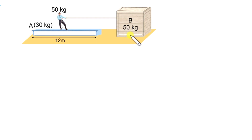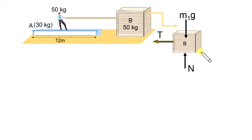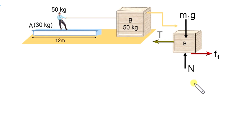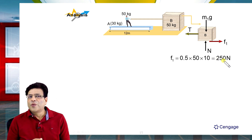Let us analyze the forces on the box. Weight acts downward, normal reaction from ground acts upward, and tension acts leftward. Since the box is moving slowly, net force on the box is zero, so friction acts rightward and is kinetic in nature. This friction force f1 equals mu times N, where N equals m1g. So f1 = 0.5 × 50 × 10 = 250 Newton. The friction force offered by ground on the box is 250 Newton.